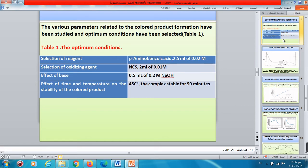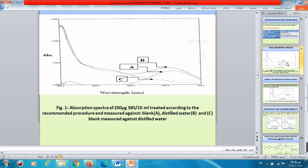Effect of time and temperature on the stability of the colored product also studied. Our reaction is somewhat slow. It needs heating the flask in water bath at different temperatures. The results indicated that 45 degrees Celsius is the optimum temperature because it gives complex stable for 90 minutes at least. Figure 1 includes the absorption spectrum. A is the product against blank, B is product against distilled water, and C is blank against distilled water.